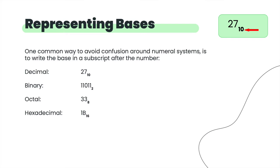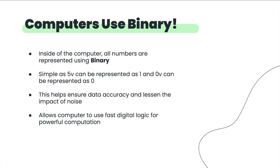Inside your actual computers, numbers are always stored as binary. This is really simple because it lets us say: if we have five volts, it's a 1; if we have no volts, it's a 0. Anything in between, as long as it's closer to one end or the other — even with noise — we can always say it's a 1 or 0. This is really good for eliminating noise and forms the foundation of digital logic computation.